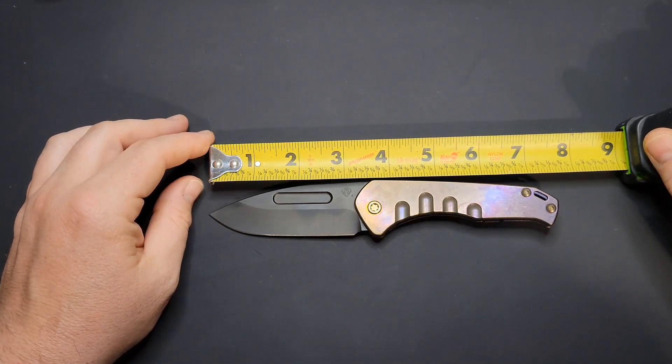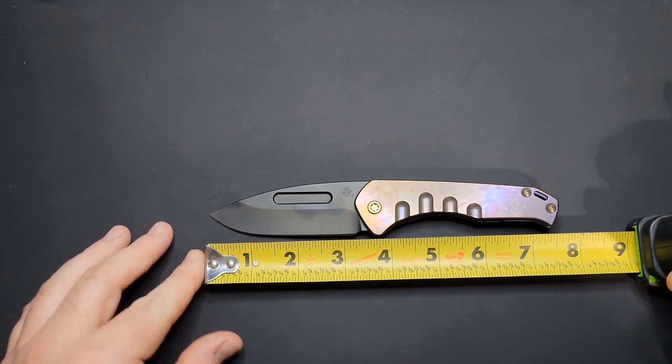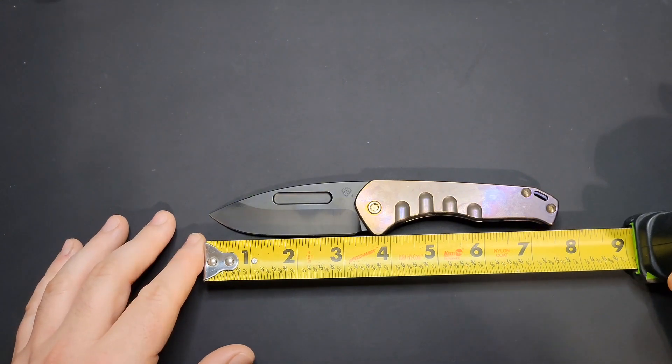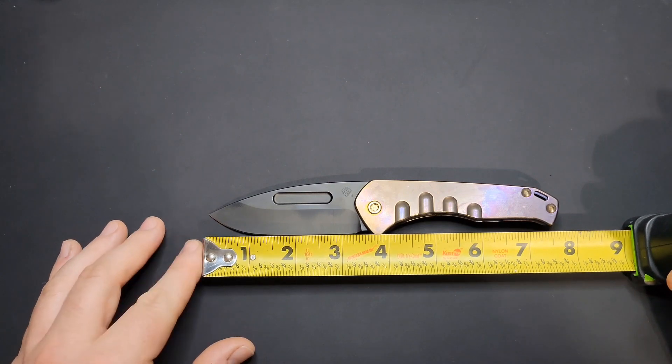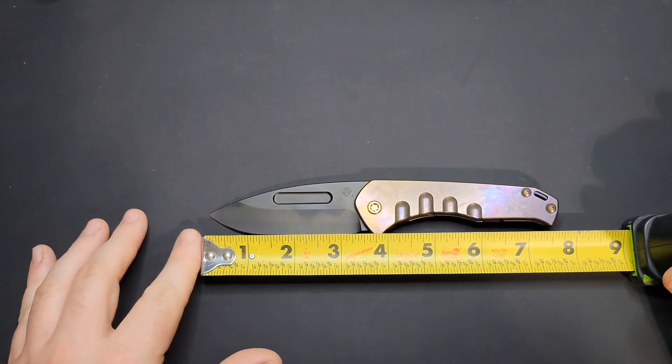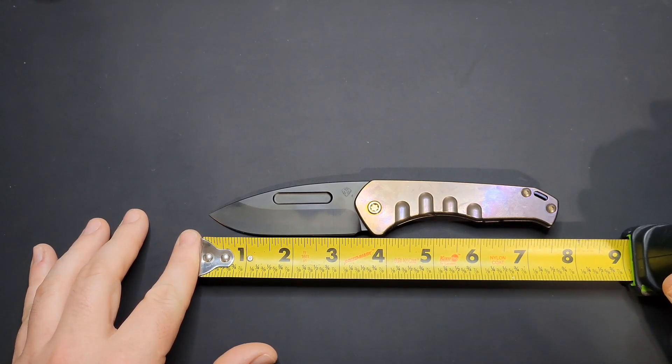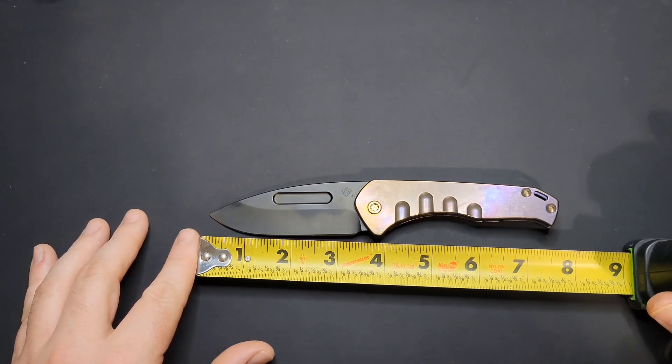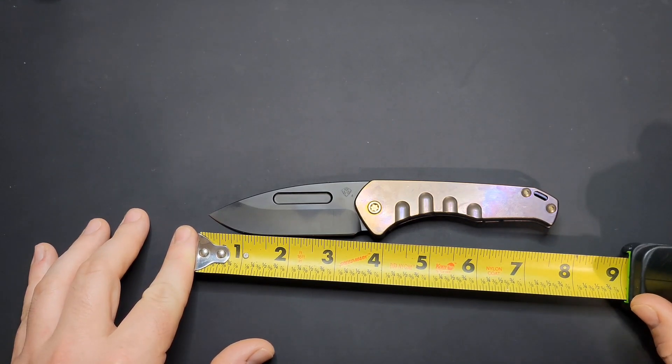For this one in particular, most people think Medford, you're dealing with an overbuilt knife. This one is pretty overbuilt but it's actually really slim, like it says in the name, Praetorian Slim. Pretty small for a Medford really. From the tip of the blade to the end of the handle, you're looking right at seven and five-eighths. Blade length, you're looking at three and a half if you go all the way back here to where it meets up with the handle.